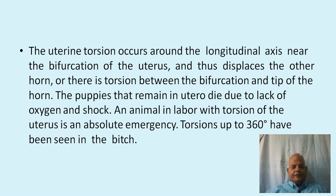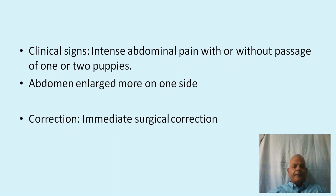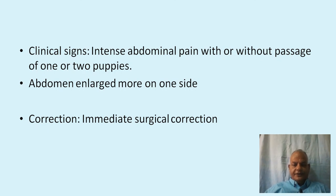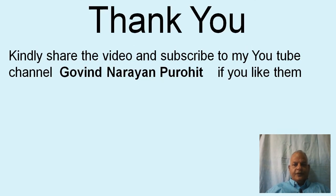An animal in labor with torsion of the uterus is an absolute emergency. An emergency laparohysterectomy and cesarean section must be performed. Torsions up to 360 degrees have been recorded in the bitch. Clinical signs include intense abdominal pain with or without passage of one or two puppies, abdominal enlargement on one side, and correction requires immediate surgery.